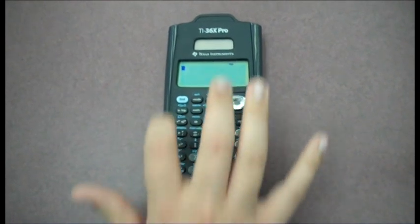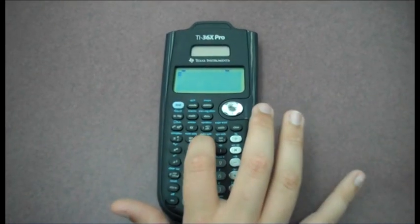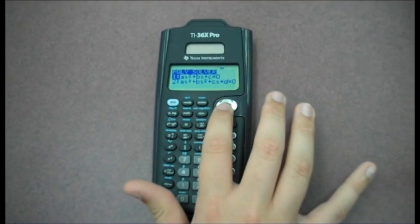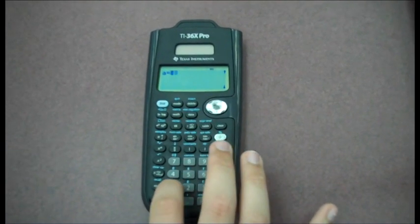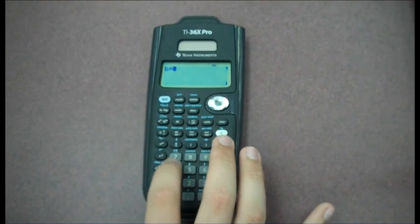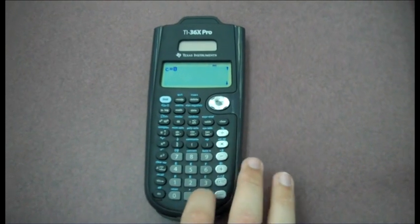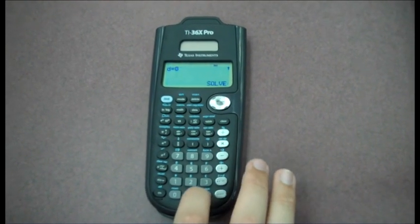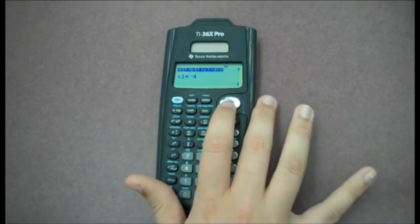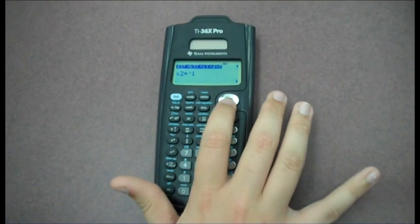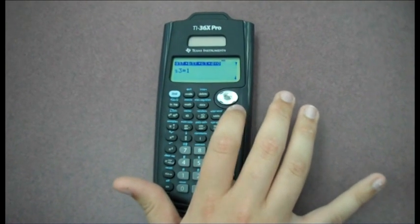Turn your calculator on, then press the second key followed by the cosine button. Scroll down to option 2 and press enter. Enter A is 1, B is 4, C is -1, and D is -4. Press enter, and then enter again to solve. X1 is -4, X2 is -1, and X3 is 1.